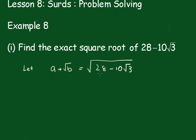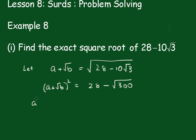Now we'll square both sides, so we'll have a plus root b, all squared, equals 28 minus — and I'll take this 10 inside the square root — so squaring it becomes 100, making this 300. Remember the brackets: that will be a squared plus twice the product 2a root b, plus root b squared, which is just b, equals 28 minus the square root of 300.